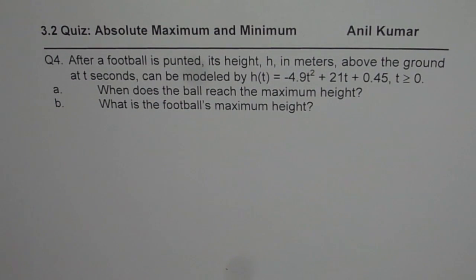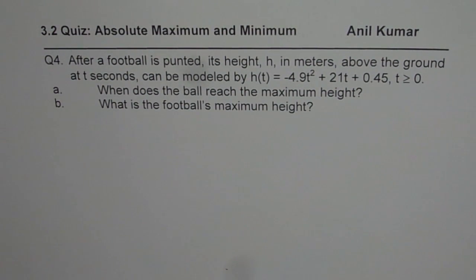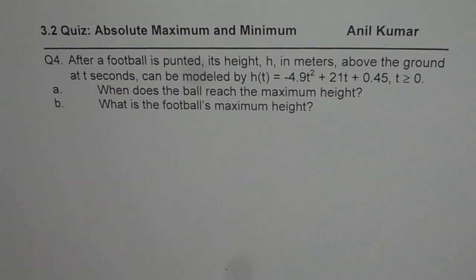I am Anil Kumar and here is the solution to question number 4 from your quiz on absolute maximum and minimum. After a football is punted, its height h in meters above the ground at t seconds can be modeled by h(t) = -4.9t² + 21t + 0.45, where t ≥ 0. When does the ball reach the maximum height, and what is the football's maximum height?